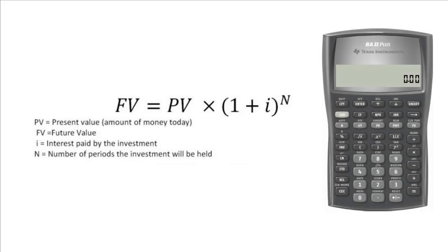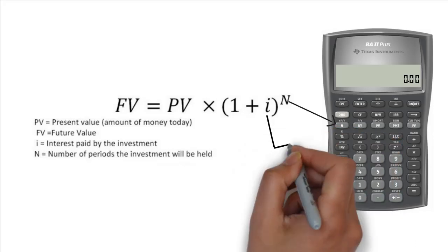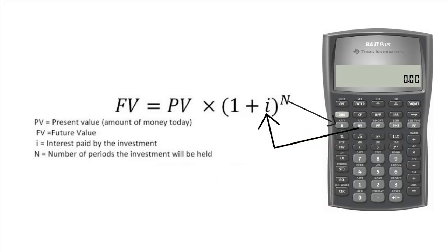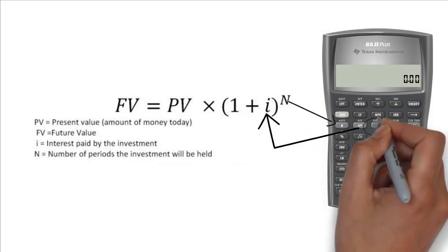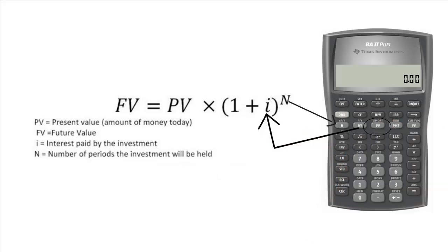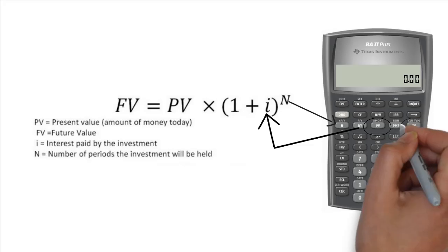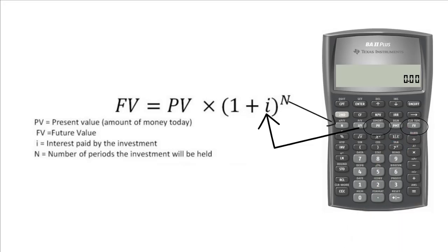For instance, n is the number of years, which matches with the formula. I/Y is i in the formula. PV is the present value in the formula. PMT is not in the formula for our case, but you can always enter 0 for this. FV is the future value in the formula.